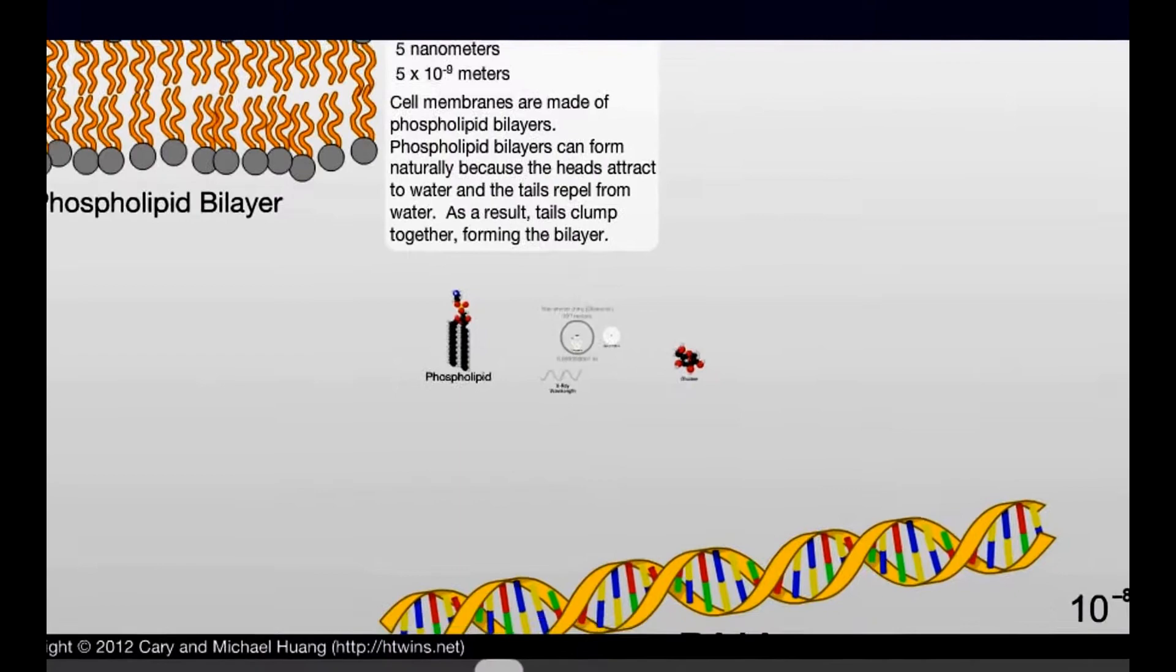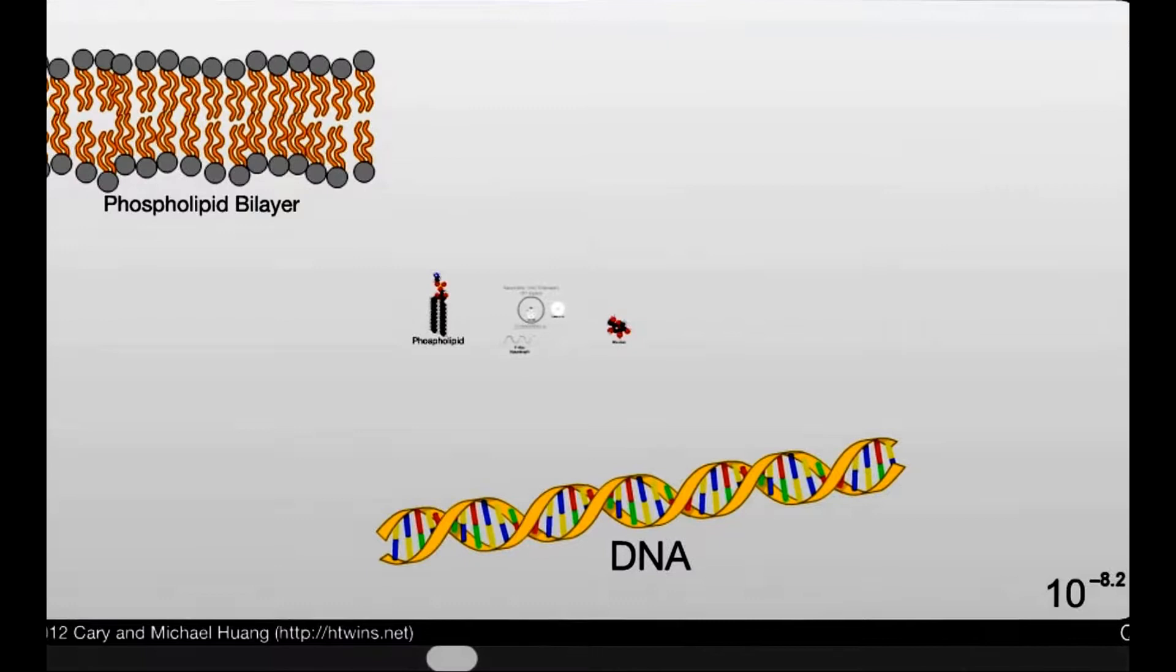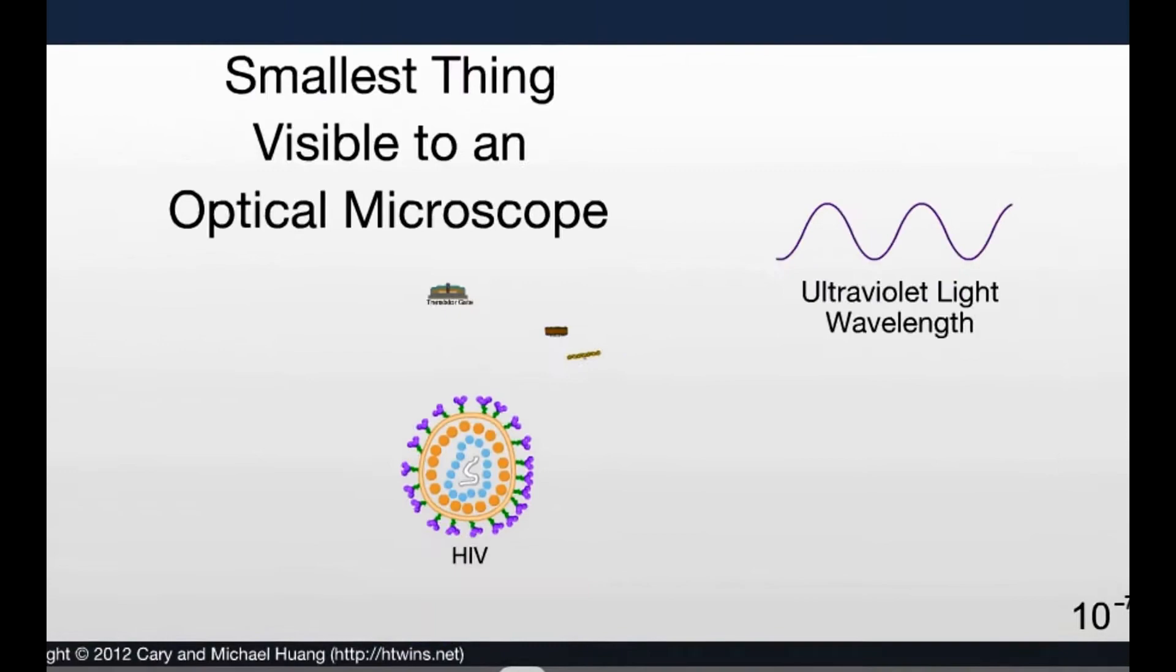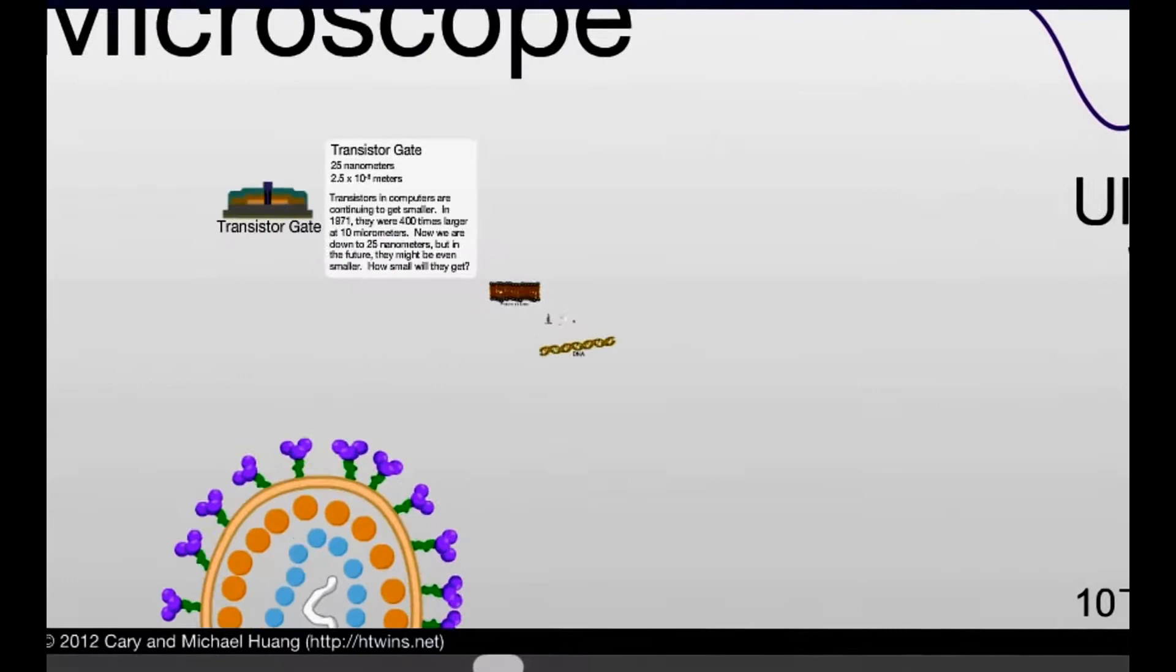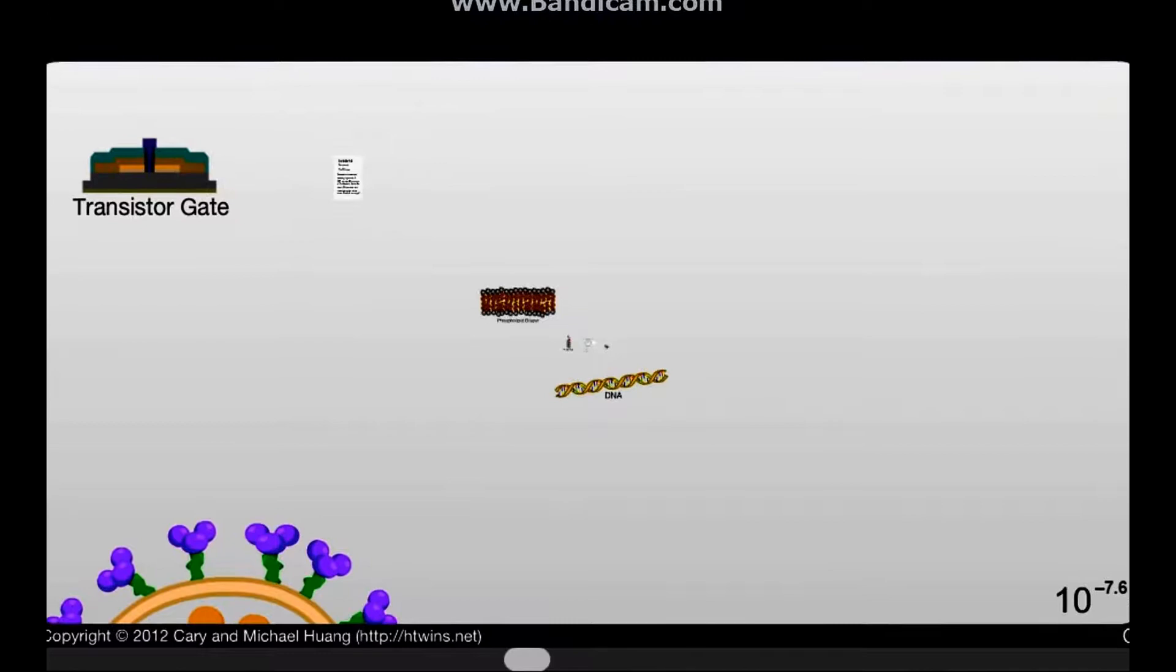You know what? Hold on. I actually do want to look at this now. DNA. I wish I could drag this far, but it's not as good as it should be. But yeah, that transistor gate is the smallest thing ever made by humans. That's insane.